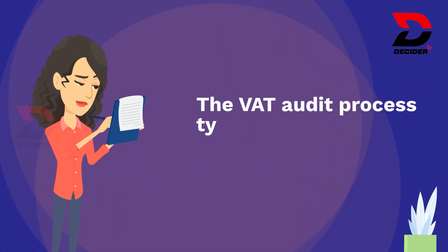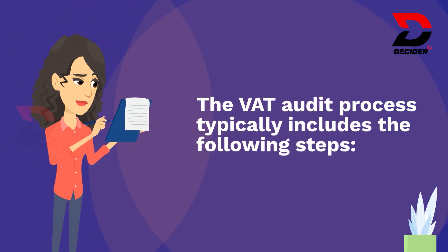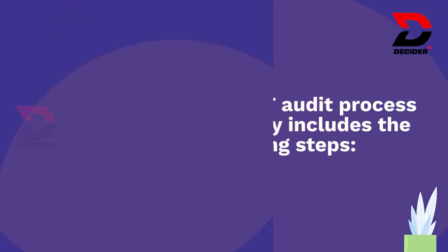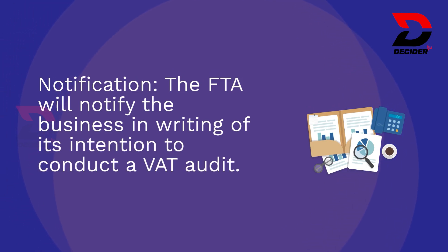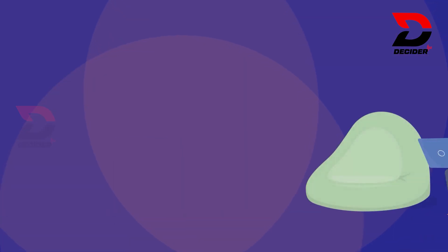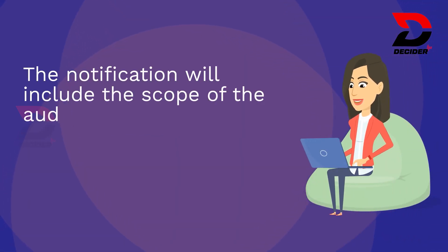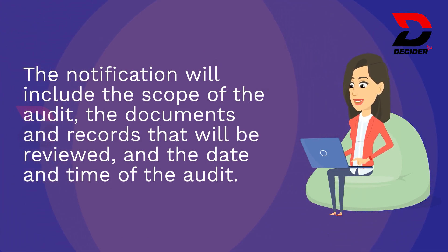The VAT audit process typically includes the following steps. Notification: The FTA will notify the business in writing of its intention to conduct a VAT audit. The notification will include the scope of the audit, the documents and records that will be reviewed, and the date and time of the audit.